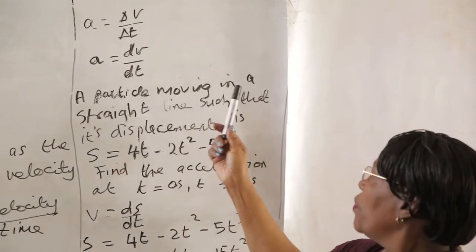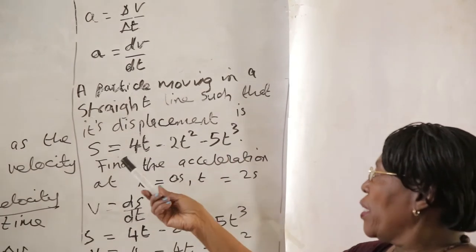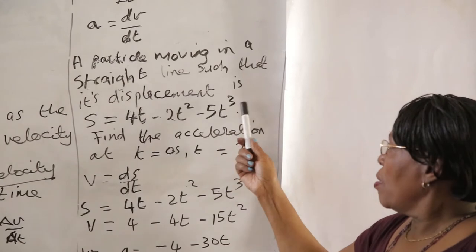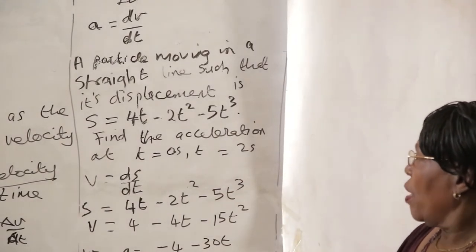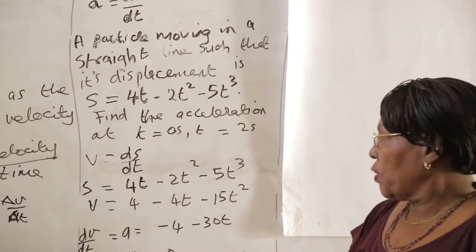A particle moving in a straight line such that its displacement is given as S is equal to 4t minus 2t squared minus 5t cubed. Find the acceleration when t is equal to 0 and when t is equal to 2 seconds.